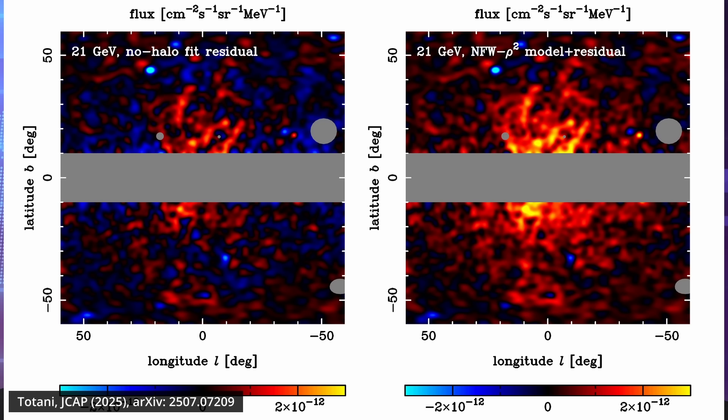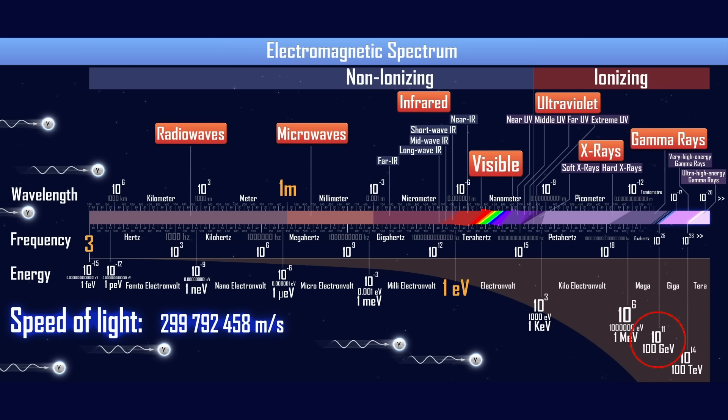Concretely, what he did is to reanalyze data from the Fermi satellite, the Large Area Telescope, from 2008 to 2023. In this data, he identified a spherical distribution of gamma rays in the high energy range of around 20 gigaelectron volts, GeV for short. This is a really high energy, far beyond x-rays. For comparison, 1 GeV is about the mass of a proton.